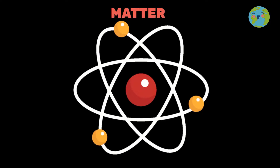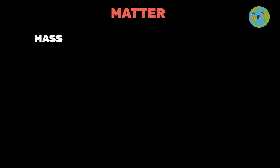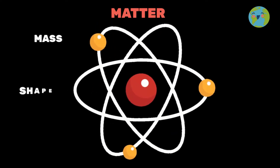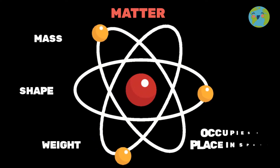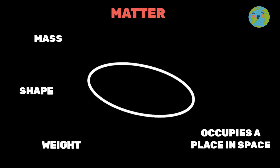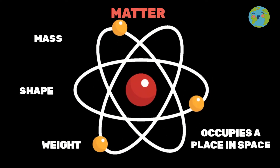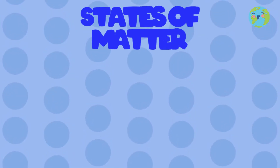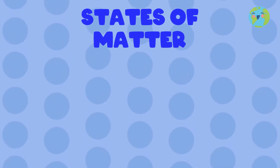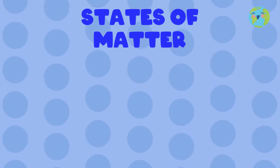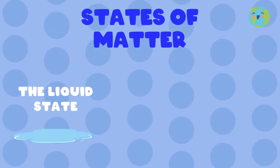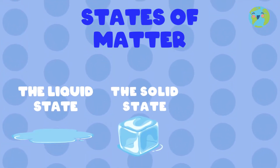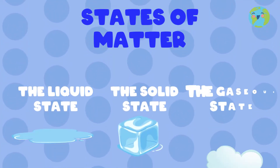We already learned in our video about matter that matter is everything that has a mass, a weight, and occupies a space. Now we are going to learn with a very easy example the different states of matter: the liquid state, the solid state, and the gaseous state.